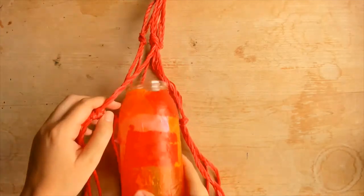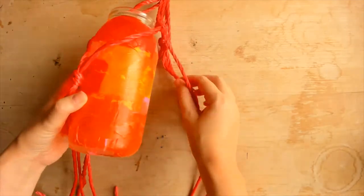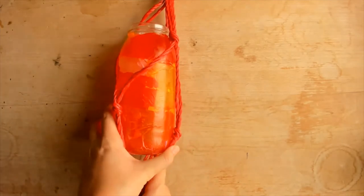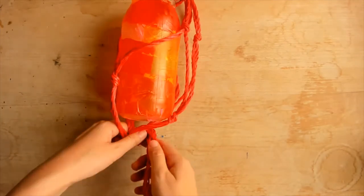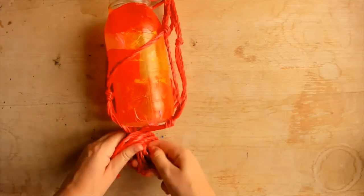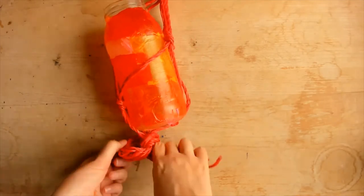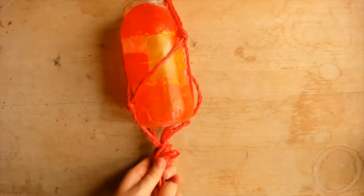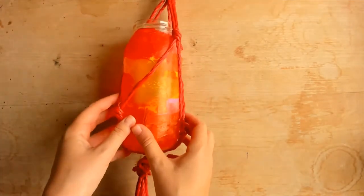Now check your jar fits inside the mesh you have created. If it doesn't, adjust the height of the second row of knots you made. Finally, knot all of the cords together in one big knot underneath the jar. You can tidy up the bottom of the lantern holder by snipping away any loose bits of rope.